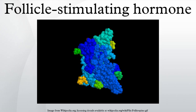The gene for the alpha subunit is located on chromosome 6p21.1–23 and is expressed in different cell types. The gene for the FSH beta subunit is located on chromosome 11p13, and is expressed in gonadotrope cells of the pituitary, controlled by GnRH, inhibited by inhibin, and enhanced by activin.